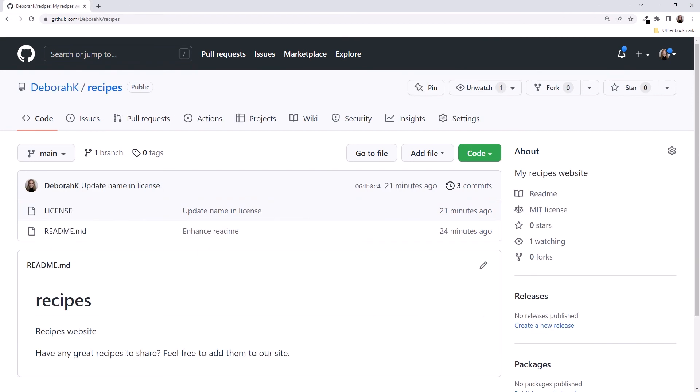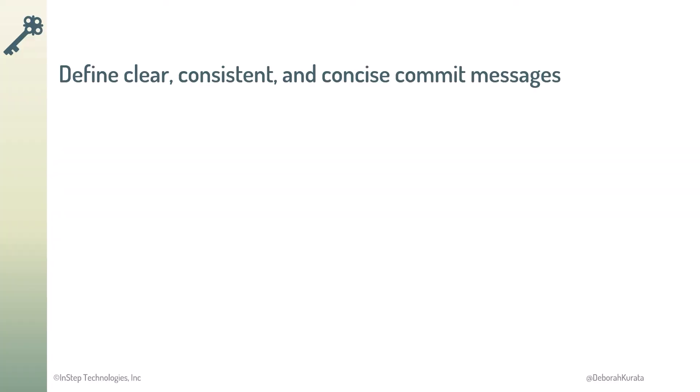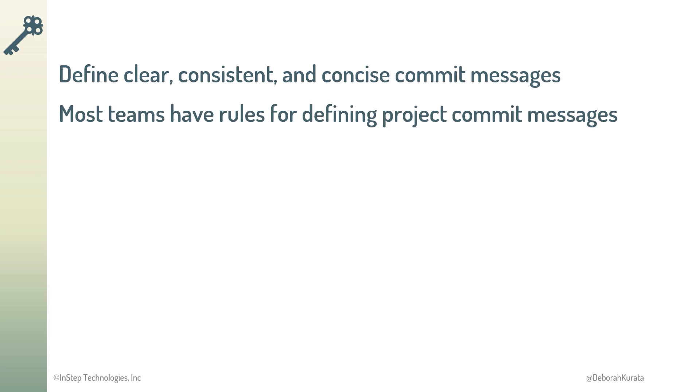So, it's important to define clear, consistent, and concise commit messages, especially when working on a team. Most teams have rules for defining project commit messages. Be sure to consult the project documentation before you commit to a team project. Next up, let's look at VS Code.